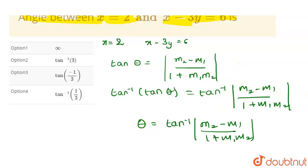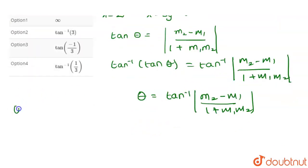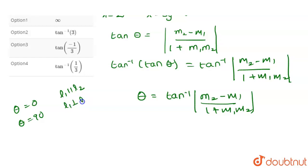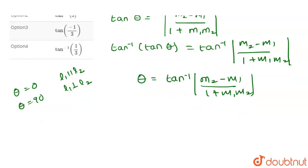If θ = 0, then the lines are parallel. For θ = 90°, line L₁ is perpendicular to L₂. The m₁ and m₂ terms are the slopes of the equations of the lines. Now we consider the general equation of a straight line: y = mx + c.